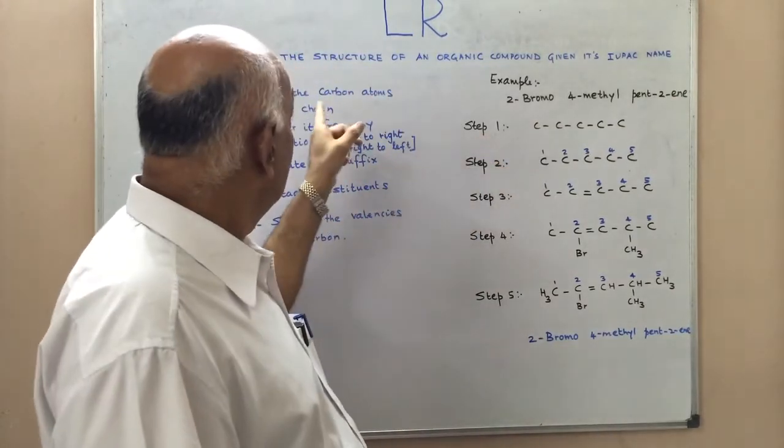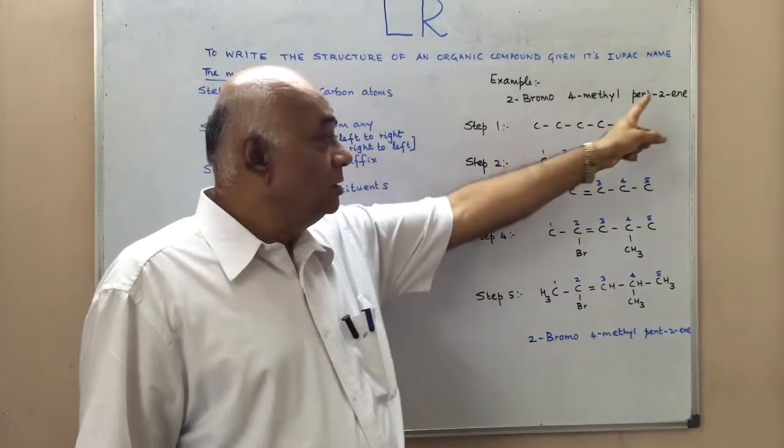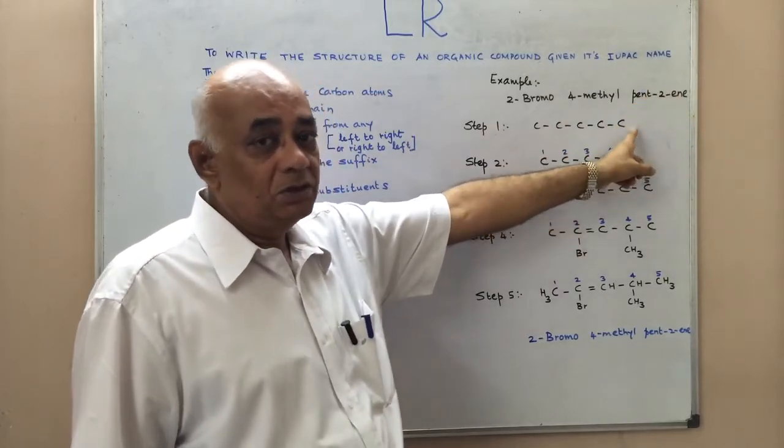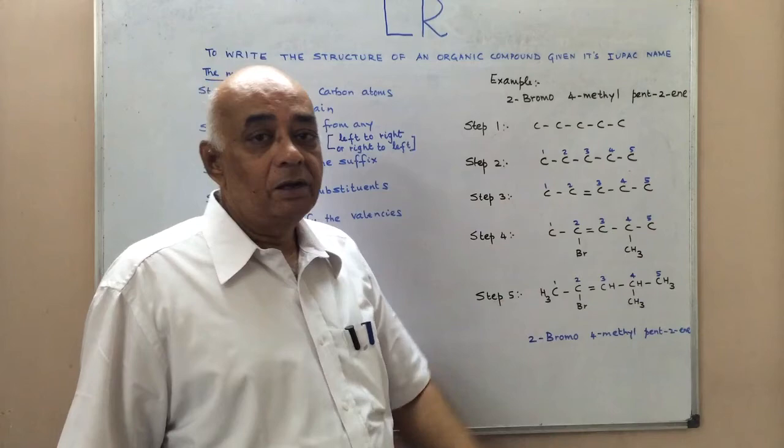Step 1, we write the carbon atoms in the chain. There are 5 carbon atoms. This is a pent, so we have 5 carbon atoms.